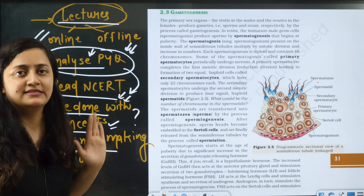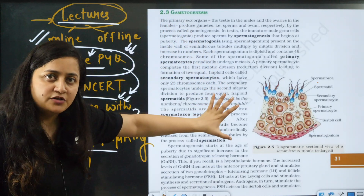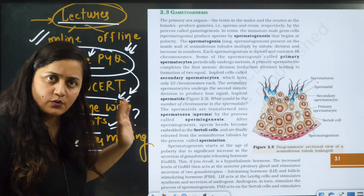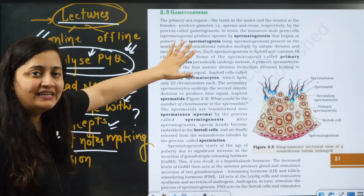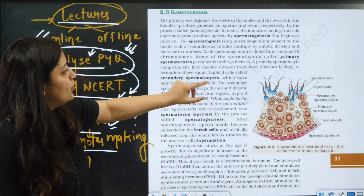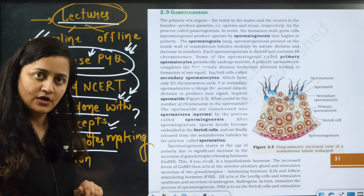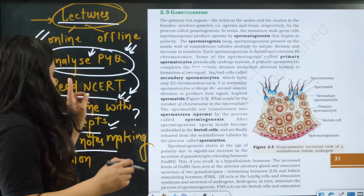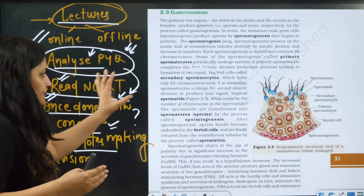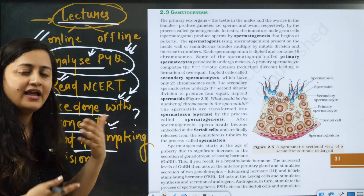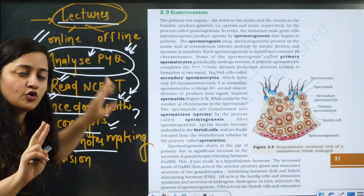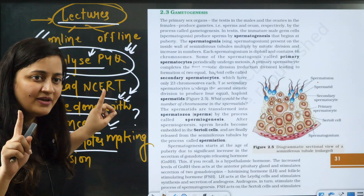After previous year paper analysis, just read the NCERT. During your first reading, there is no need to mark or highlight anything. While reading, you will notice words that appeared in previous year paper questions — but still, do not make any notes during the first reading. Once you have completed all the concepts and know what is written in the NCERT, then start making your notes.